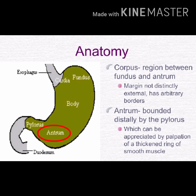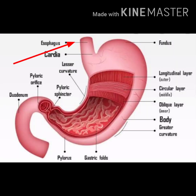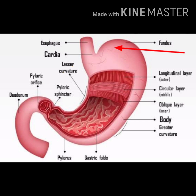The last region is the antrum, which is bounded distally by the pylorus, which can be appreciated by palpation of the thickened ring of smooth muscle. In this picture you can see the esophagus ending, followed by the cardiac region, then the fundus as the big bulging area, then the body region, and finally the antrum, which leads to the duodenum.